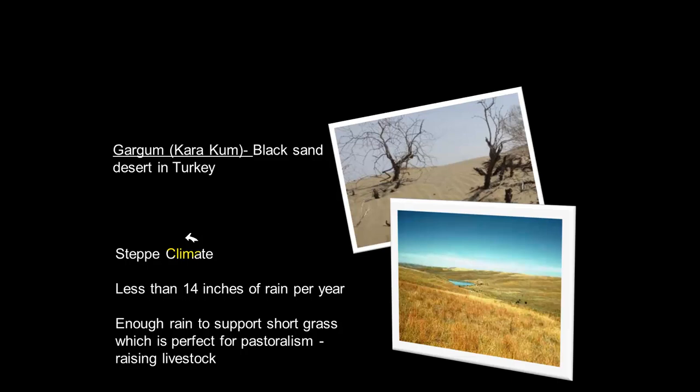The steppe climate refers to areas on the outskirts or edges of the desert that receive more rainfall — about 14 inches of rain per year. That's just enough to support short grass, which makes it well-suited for raising livestock. Here in Louisiana 14 inches doesn't sound like much, but on the outskirts of the desert it's sufficient to keep short grass growing and support livestock.